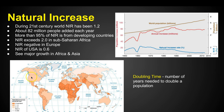The NIR of the USA is 0.6, meaning it's pretty low, but our population continues to grow. Immigration is what brings people to the United States in a steady stream. We've seen major growth in Africa and in Asia, while in Europe and North America the NIR is a lot lower, but population in the United States increases because of immigration.